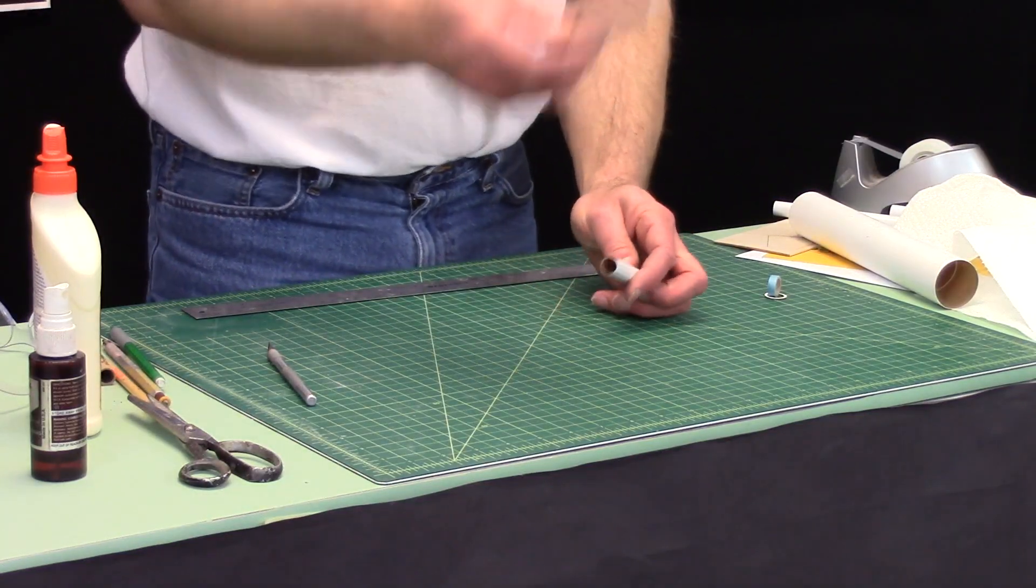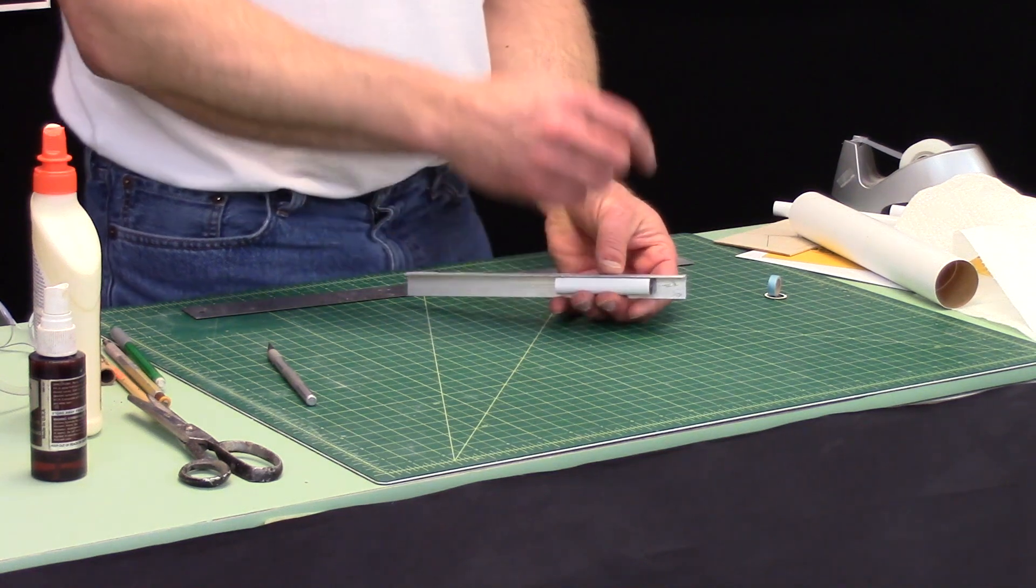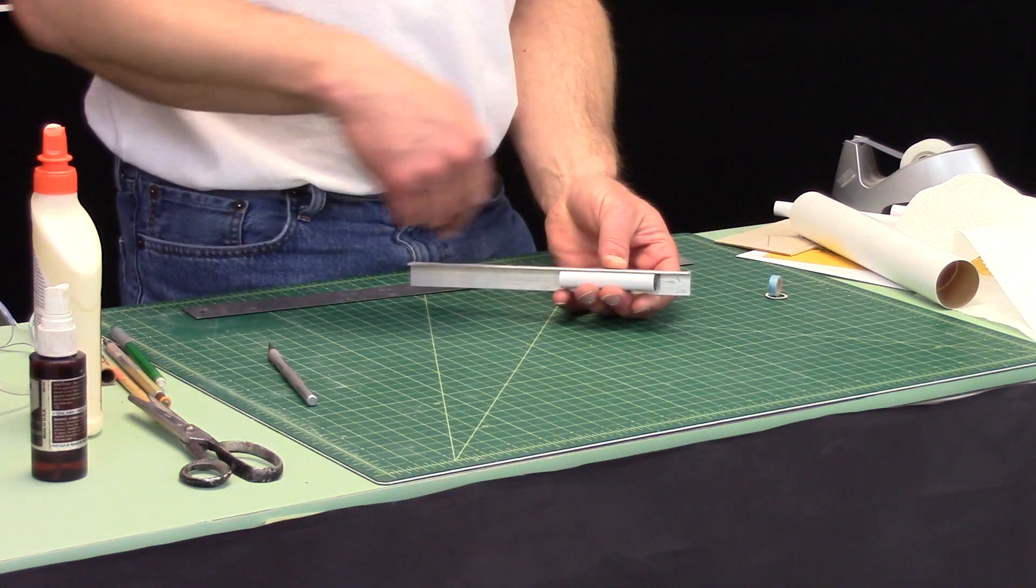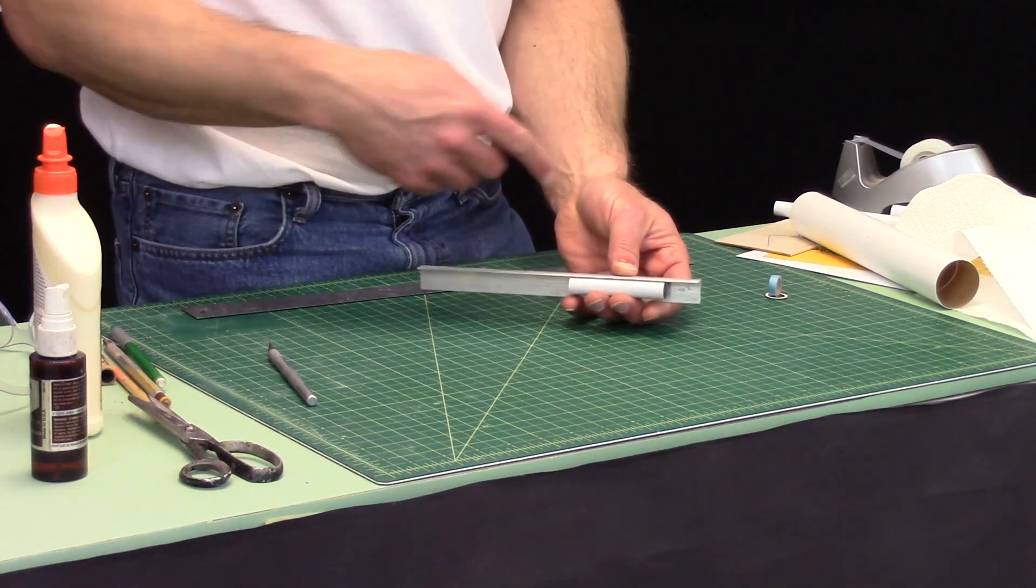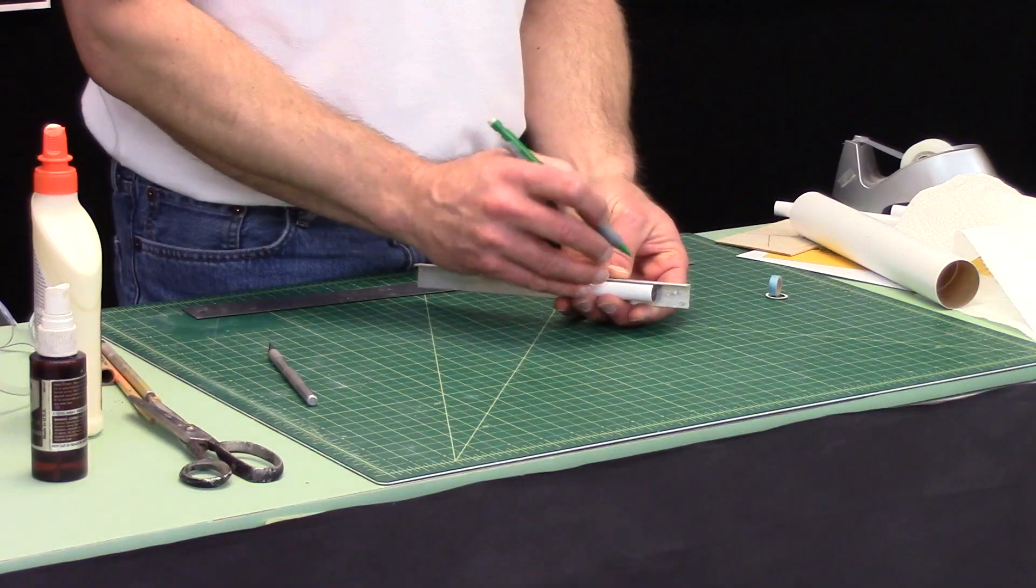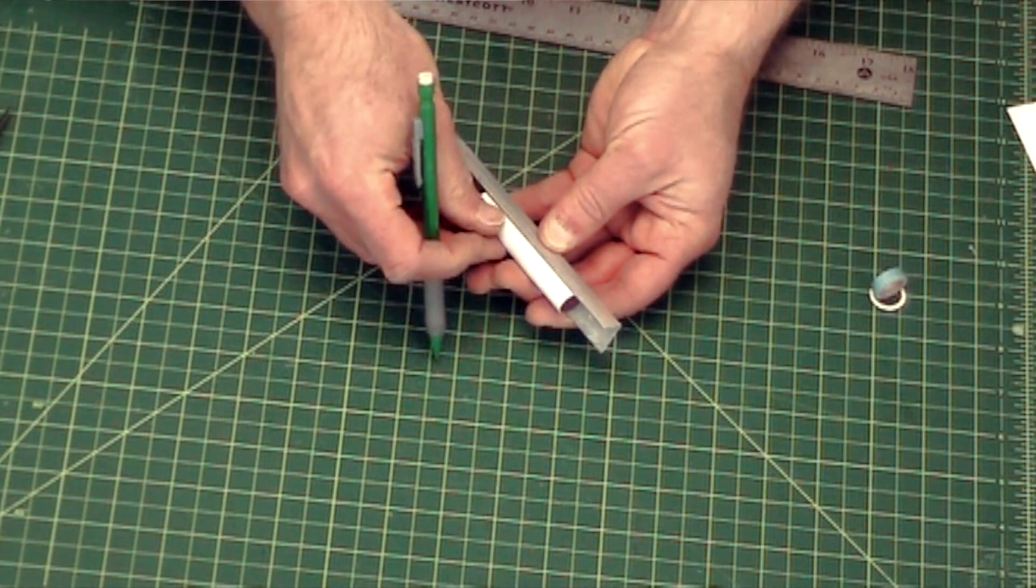Take an aluminum angle, and I use this to draw the straight lines down the tube. Estes just came out with a fin drawing tool, and it's kind of neat, but I don't have one with me. So I'm just going to use the aluminum angle, and just draw a line along the length of the tube.